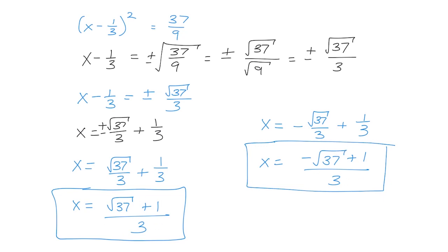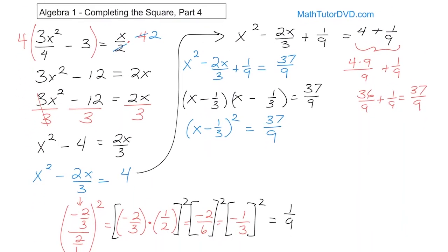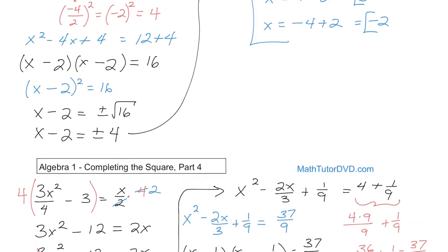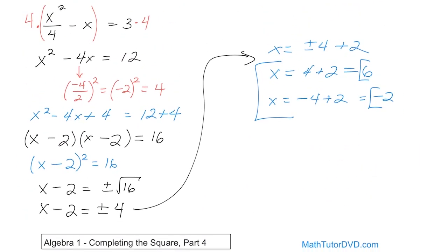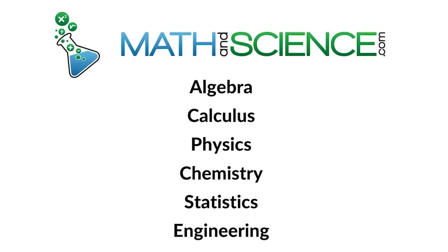Those are the answers. Sometimes when you complete the square you get ugly answers — it just happens. But if you take those and stick them back into the original problem, they'll satisfy the equation. In all of these cases we're completing the square and following the same recipe every time. Completing the square is one of the most powerful tools in algebra to solve quadratic equations. Grab a sheet of paper, practice these yourself, do the worksheet problems, and follow along to the next lesson at mathandscience.com.